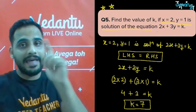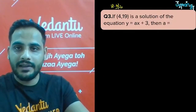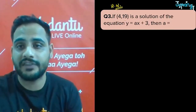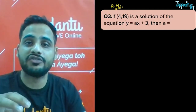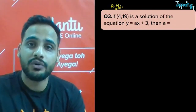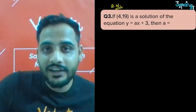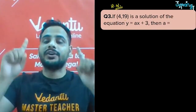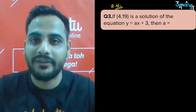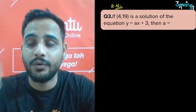Homework question: If (4, 19) is a solution of the equation y = ax + 3, find the value of a. Take a screenshot, solve it, and write your answer in the comment section.